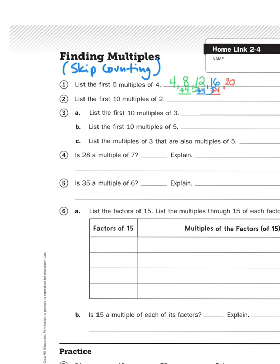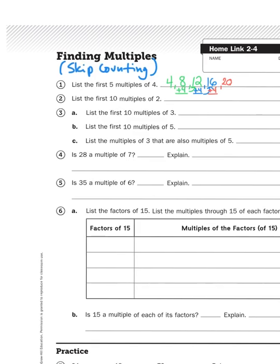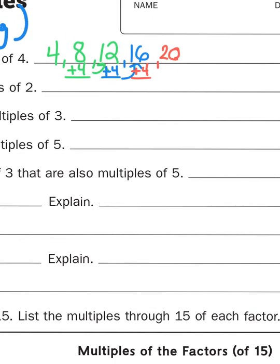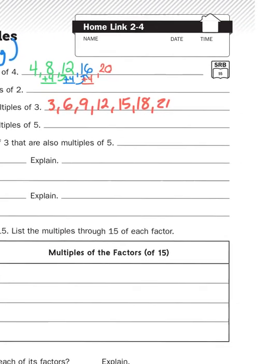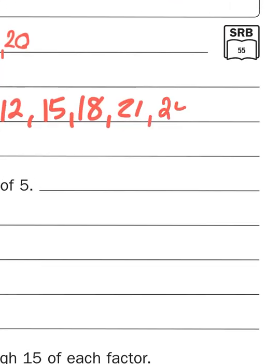Let's take a look at problem number 3A. It says, list the first 10 multiples of 3. So I'm skip counting here. Now, if you don't know all of your multiples of 3, if you consult the inside back cover of your math journal, there is a multiplication division times table that gives you all the multiples of 3 through 10. So 3, 6, 9, 12, 15, 18, 21, 24, 27, 30.